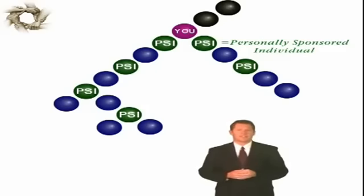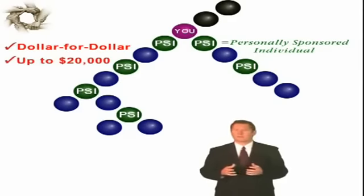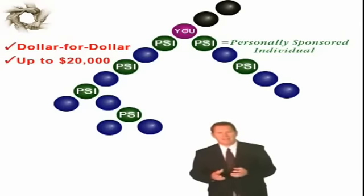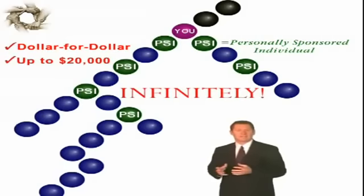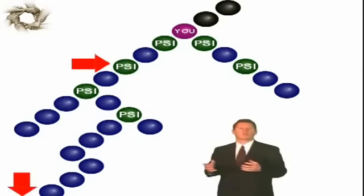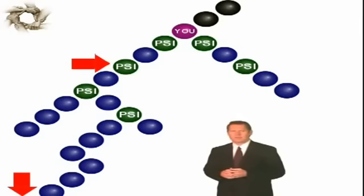As a personal sponsor, you'll receive a dollar for dollar 100% match of what these individuals produce in their basic commissions up to $20,000 per month per financial center. The most dynamic aspect of this revenue stream is that it is applied infinitely, meaning it doesn't matter if the people you sponsor are two positions away from you or 2,000 positions away from you. You still receive a 100% dollar for dollar match of what they make up to $20,000 per month per financial center. Now that's opportunity.